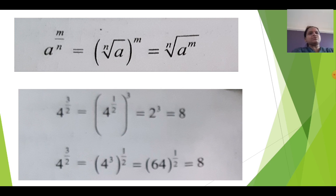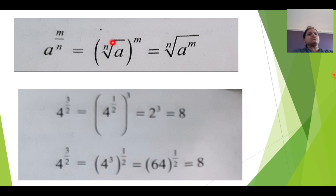Last session I explained this formula. We will revise it again because the exercise depends on it. A raised to M upon N is nothing but the nth root of A raised to M. Or it can be written as A raised to M and then take the nth root. So if you want, take the nth root first and then raise to power M, or first raise to power M and then take the nth root.